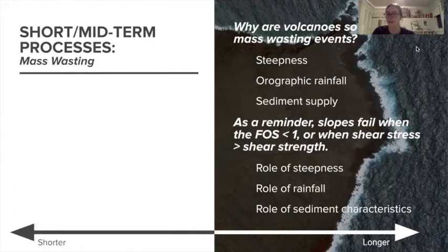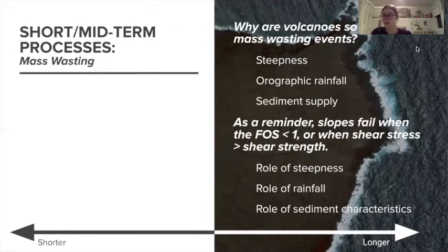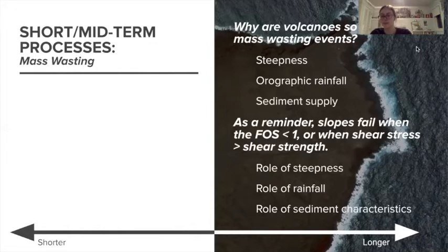Second, because of the high elevation of some volcanoes, they can have their own microclimate. Orographic precipitation and cold temperatures with increased elevation result in increased rain and snowfall. Finally, as volcanoes erupt, they can expel rock fragments of various sizes. This debris, known as pyroclastic fall deposits, are often coarse, especially near the volcano. If deposited slowly and at relatively cool temperatures, they will remain unconsolidated. In addition, the high temperatures of the volcano will enhance weathering of the rock that makes up the volcano slope and reduce its cohesion.